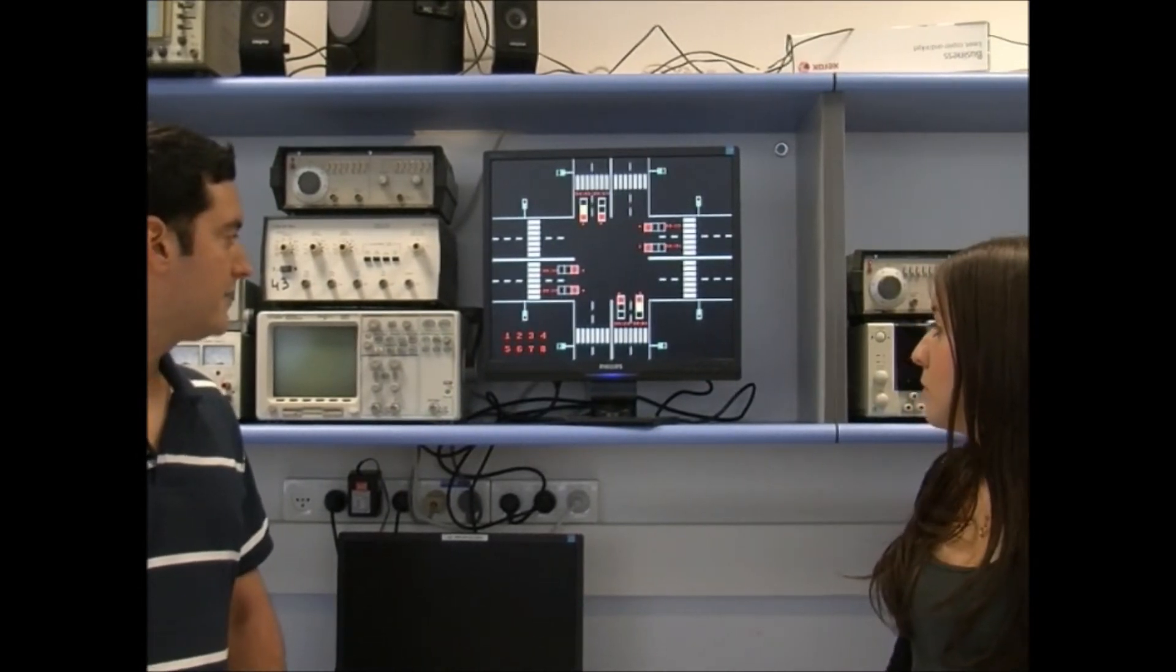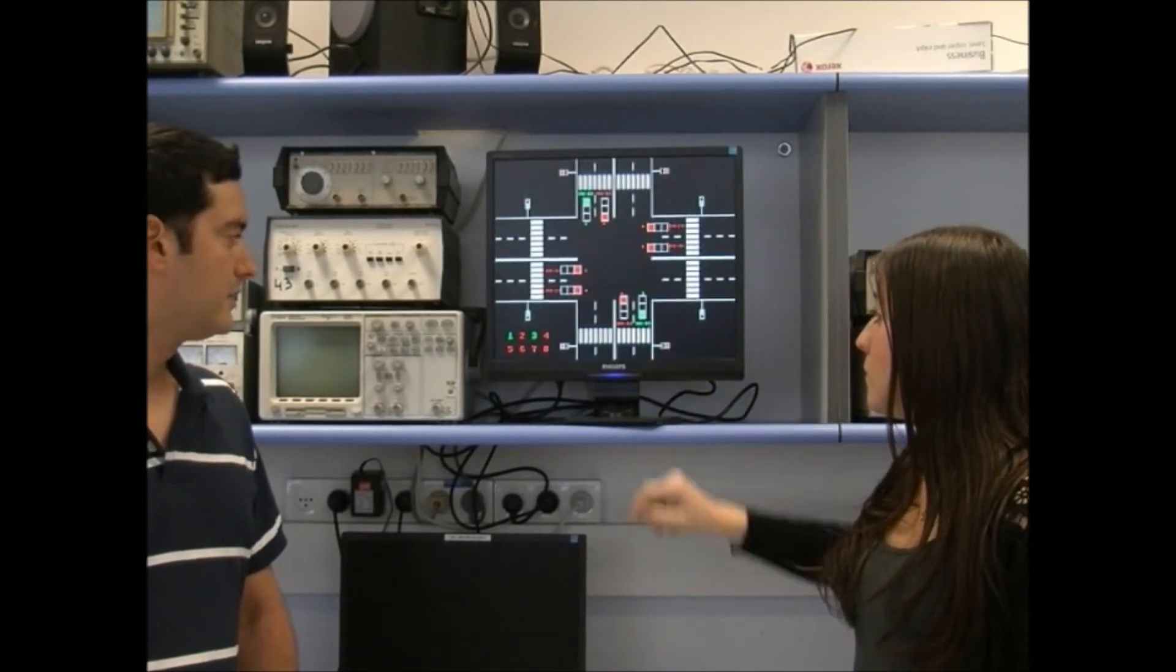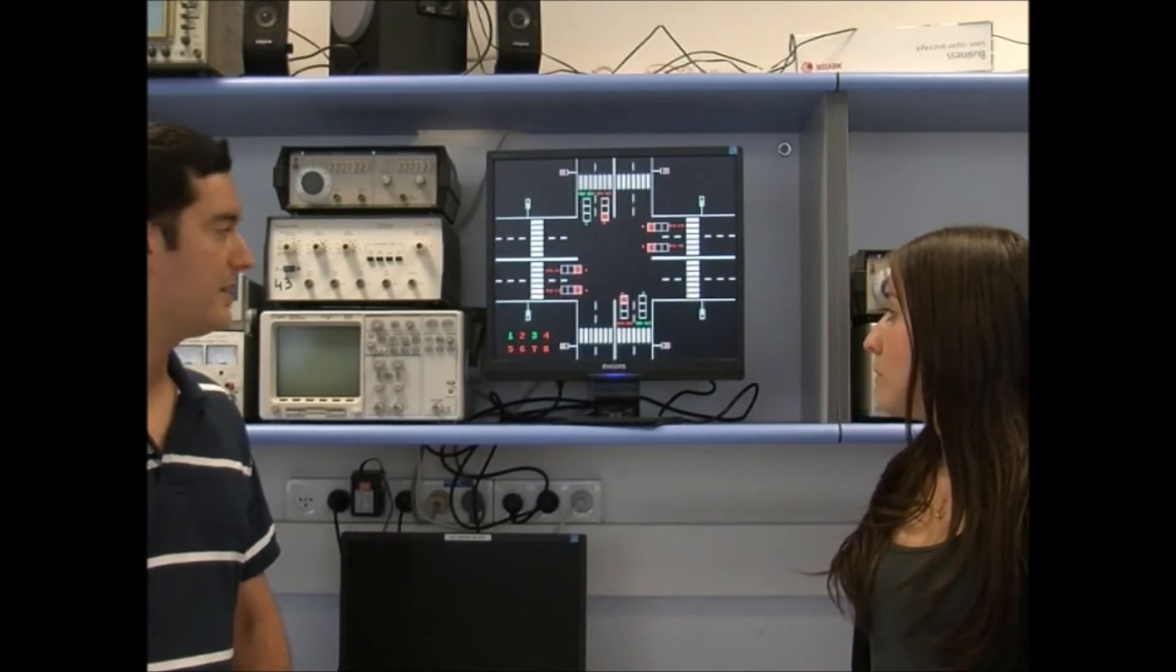Each traffic light has its own counter. It counts down and changes its color by the color of the traffic light.